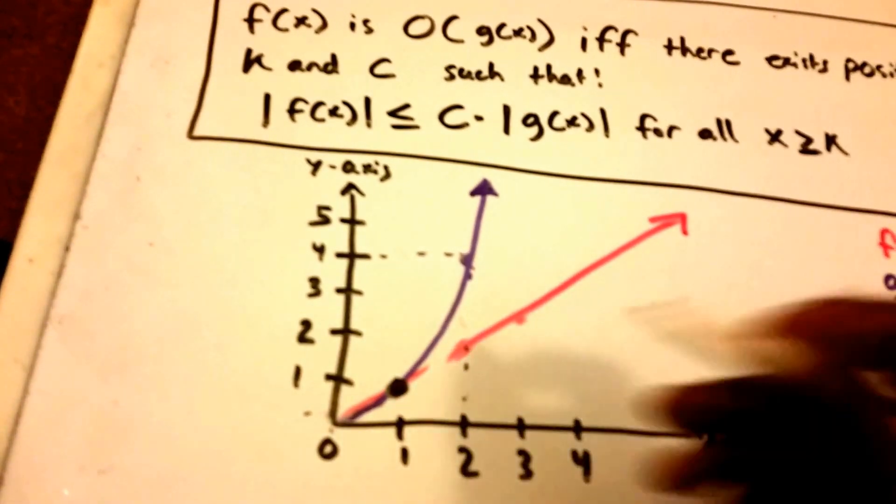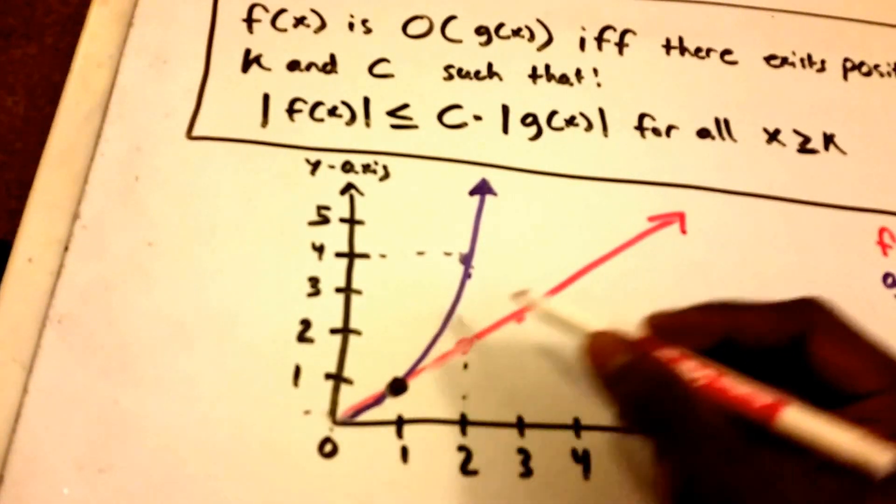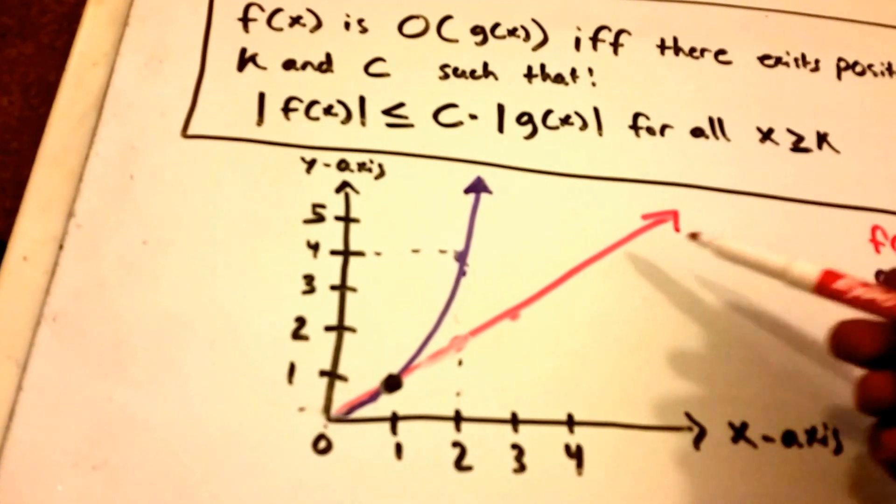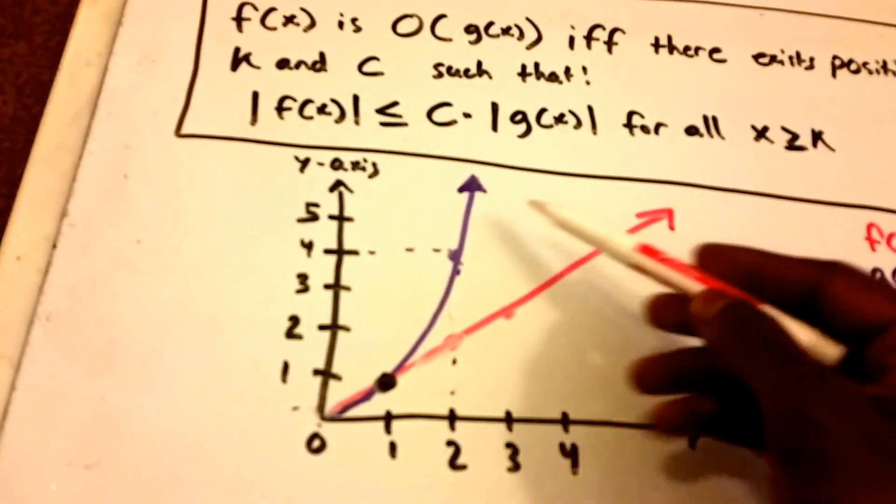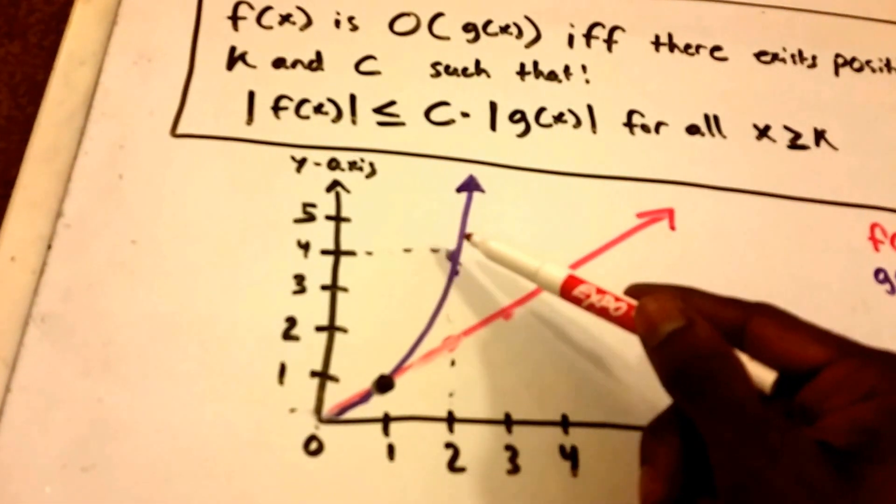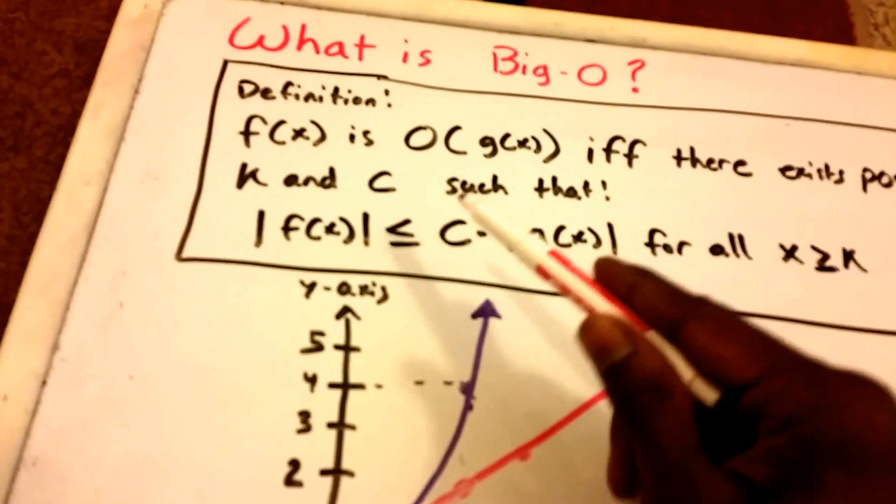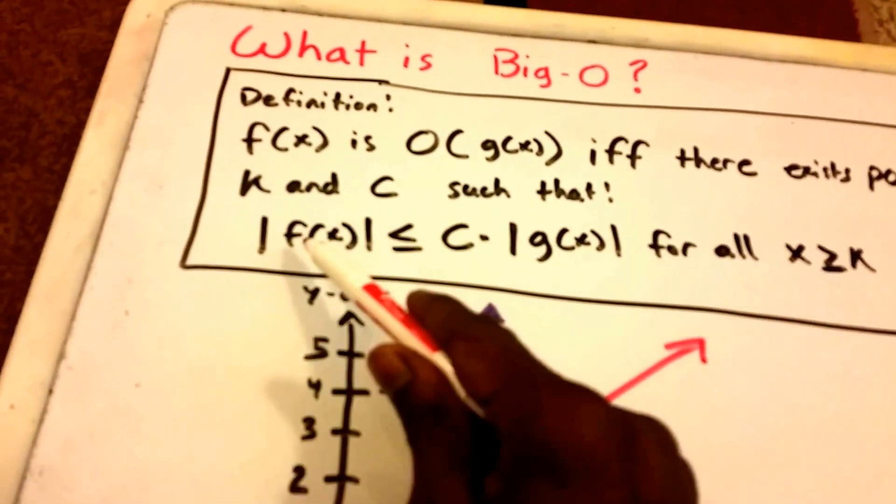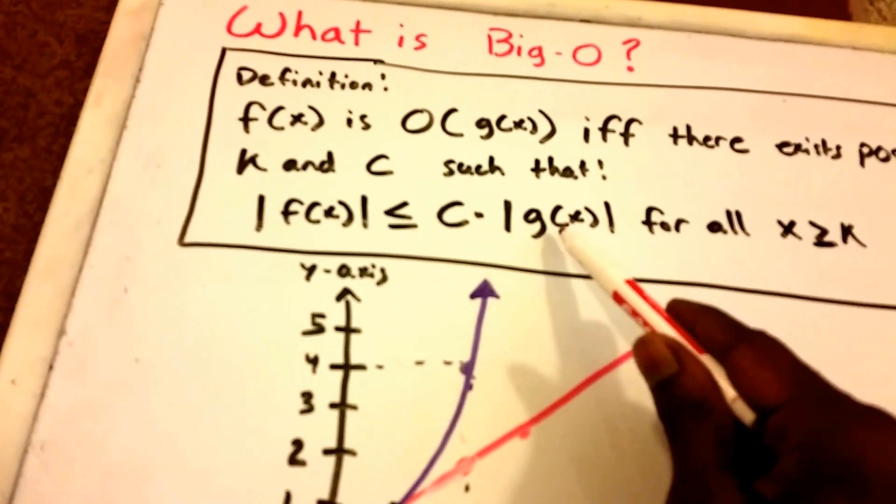Now what we'll see is at this spot here they're equal, but after that the functions are no longer equal. You now see that our function f of X grows less than or equal to our function X squared, just like our definition here: f of X grows less than or equal to our G of X.